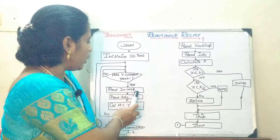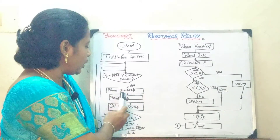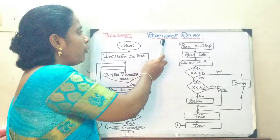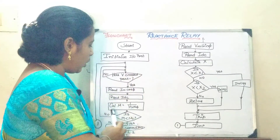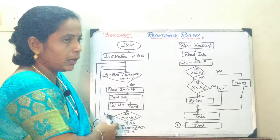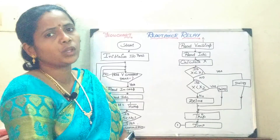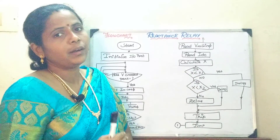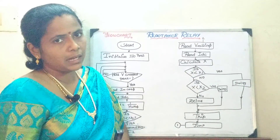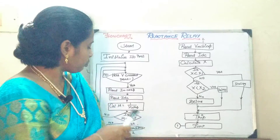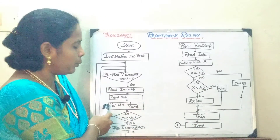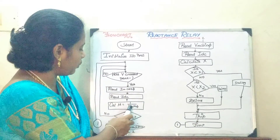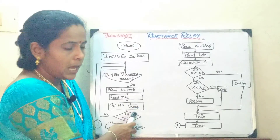Once you find out your instantaneous value of the current, compute your IDC. In reactance relay, you should be careful that you are going to compute your admittance — you cannot calculate your reactance directly. So in this case, you are going to compute your admittance, which is nothing but 1/Y cos φ.